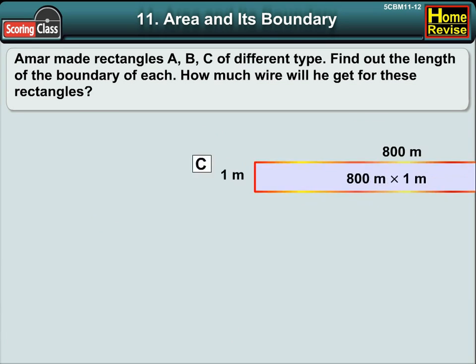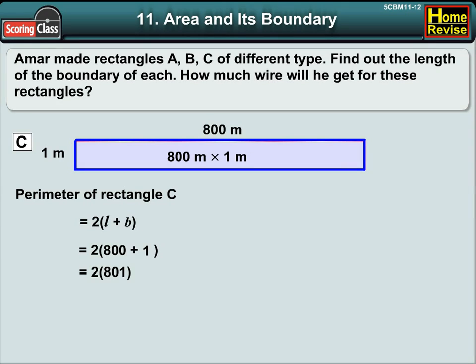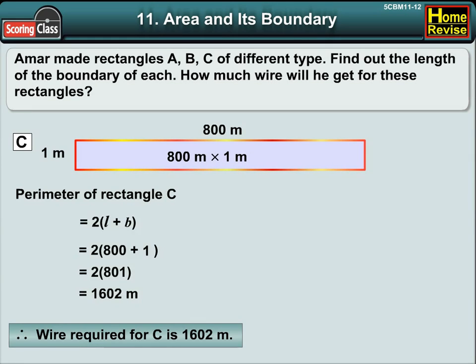For C, perimeter of rectangle C is again 2 into length plus breadth, and in this case 2 into 800 plus 1, which is equal to 2 into 801, which is equal to 1602 meters. Therefore, the wire required for C is 1602 meters.